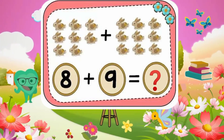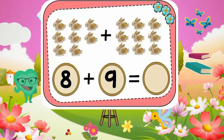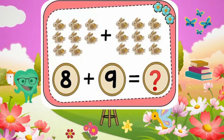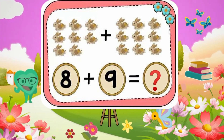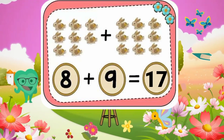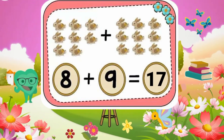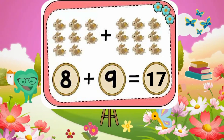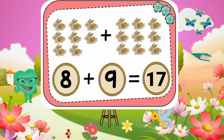8 plus 9 equals what? 8 plus 9 equals 17. Very good.